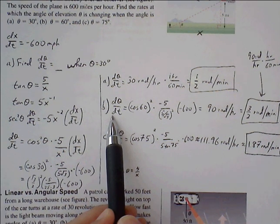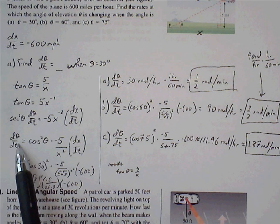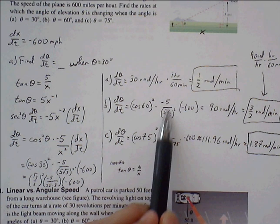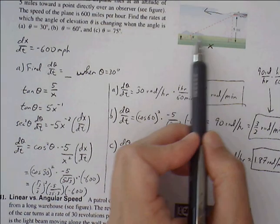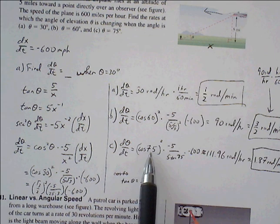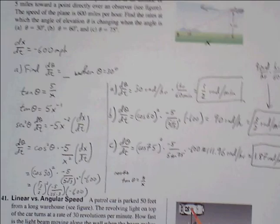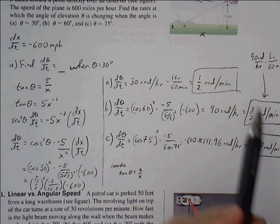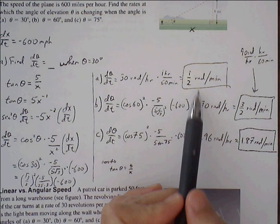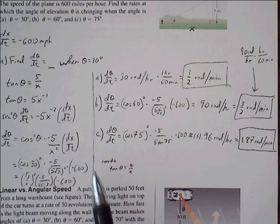For part b, when theta is 60 degrees, we still use the same formula here. But now instead of cosine of 30, now it's cosine of 60. Because this is now 60 degrees, then this x value is going to be 5 divided by root 3. So we're just using special right triangles to help us find those values. And we work that out to be 3/2 radians per minute, since we're converting from radian per hour to radian per minute using this conversion.